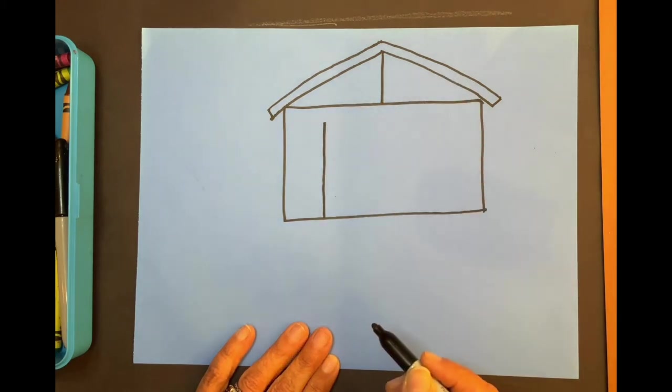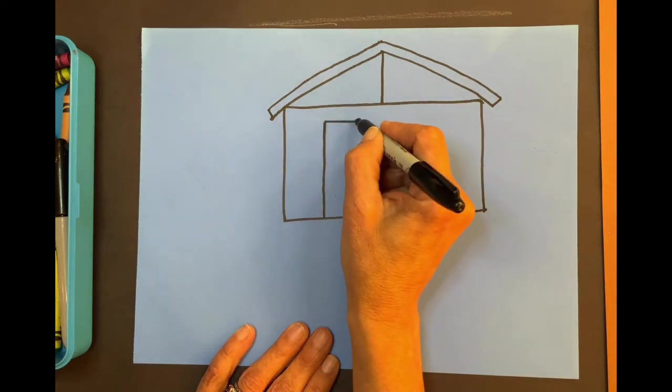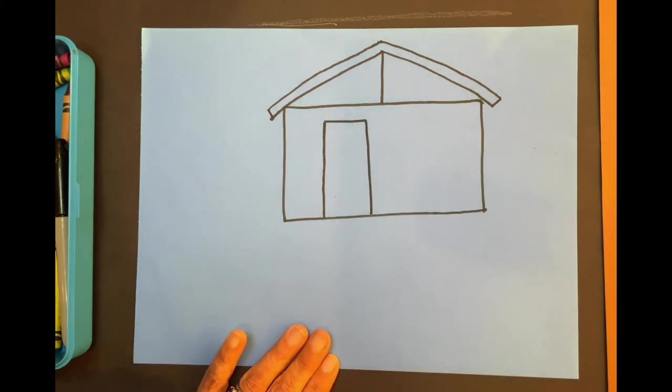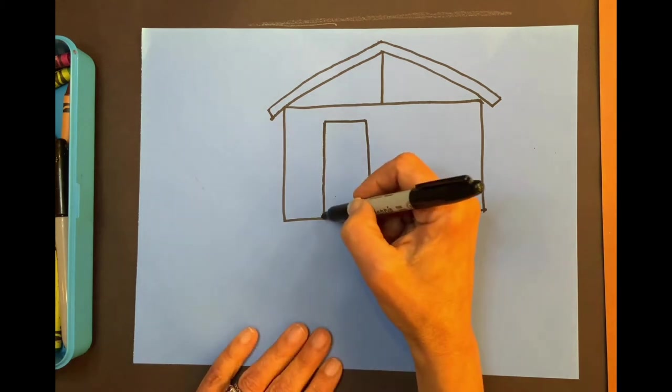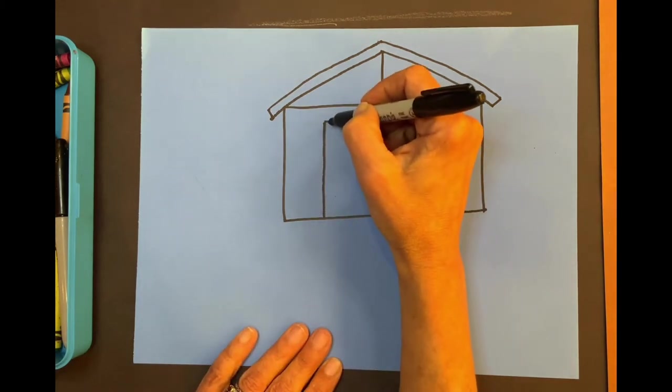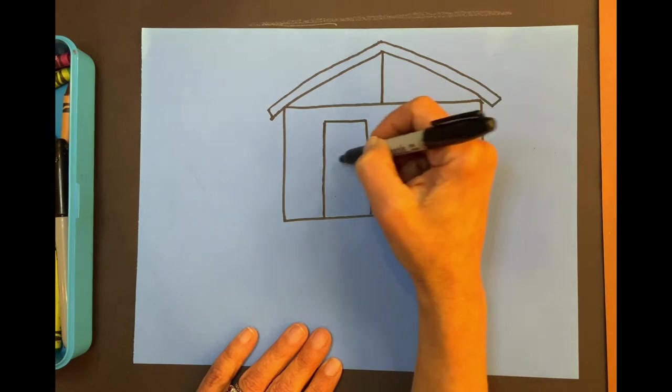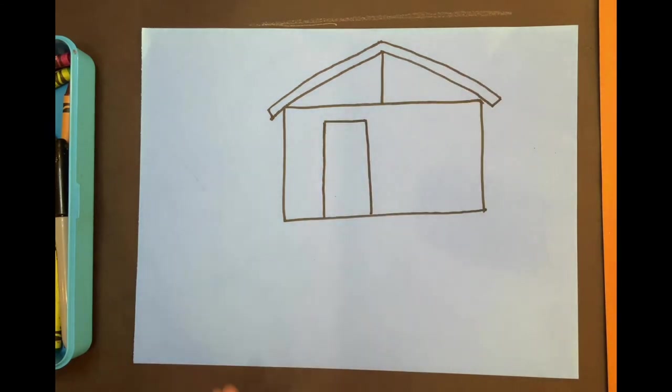across, and down. There's my rectangle for the door. So watch me again. Go up, across, and down. Make sure your door is not too short, that it goes almost near the top of the wall. It's your turn.